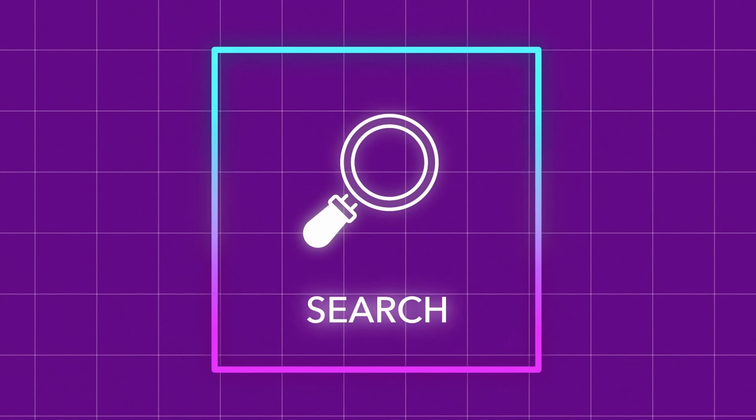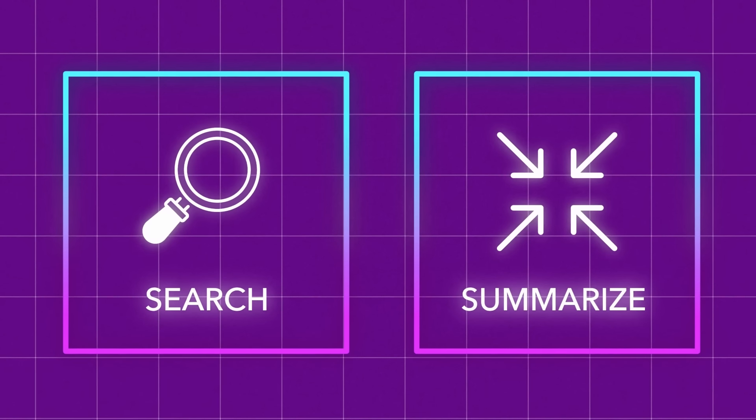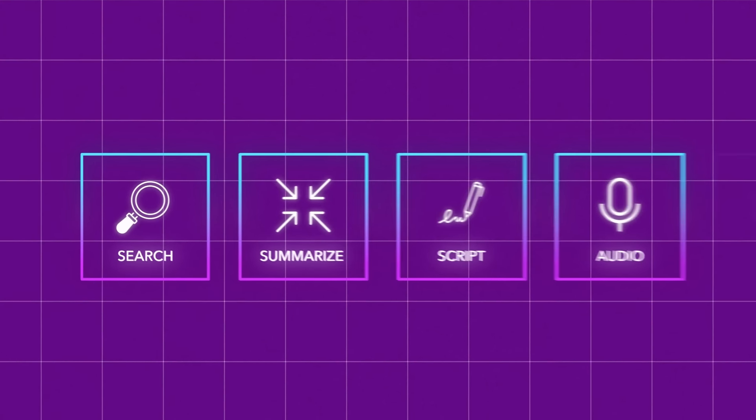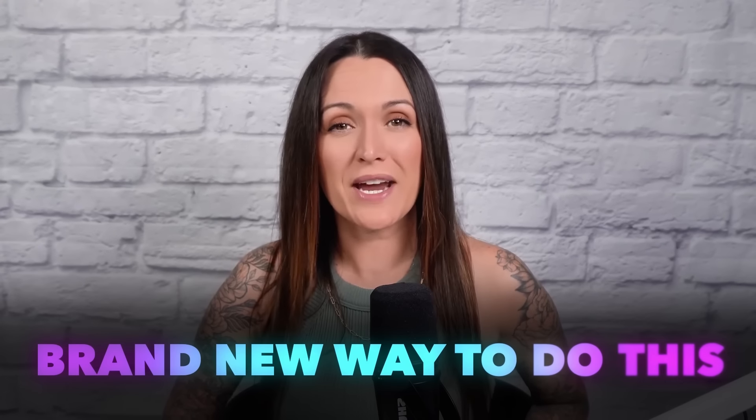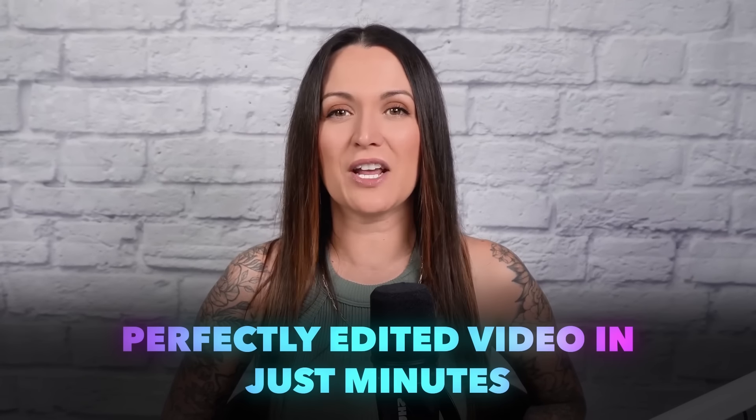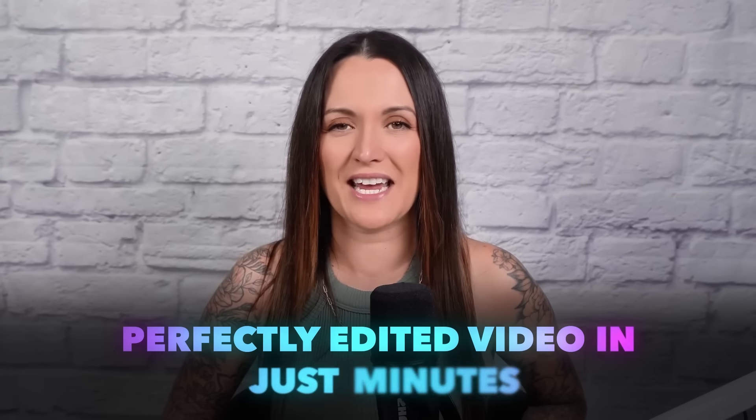First you'd have to search for the perfect article, then summarize it, write the script, record the script, then create the video footage and edit the whole thing. But the good news is I found a brand new way to do this that will take you just minutes with the help of a new AI tool. All you need to do is copy an article URL and paste it into the AI app, and the AI will do all of this work for you. The end result is a perfectly edited, engaging video in just minutes — not days. This is a perfect method for anyone who wants to create monetized, faceless content.